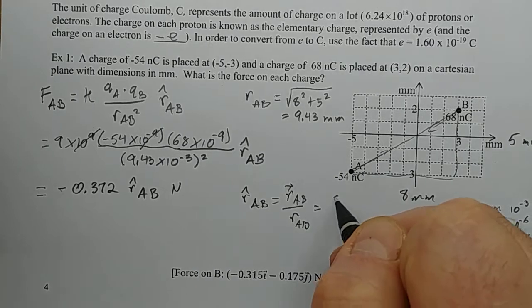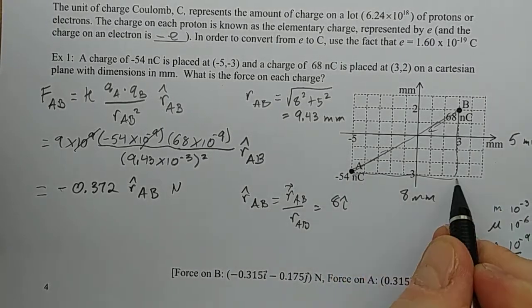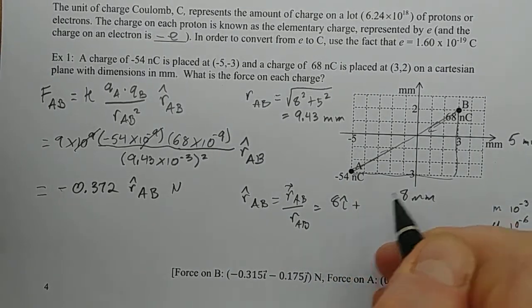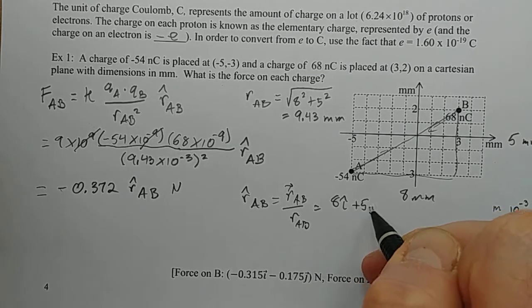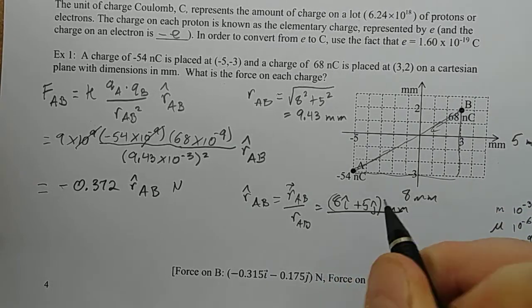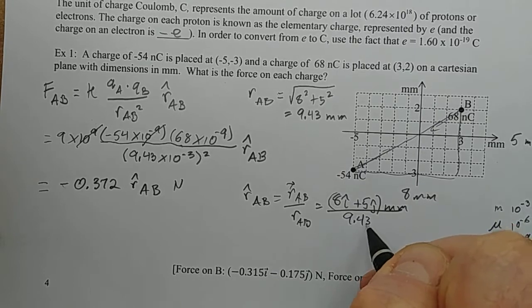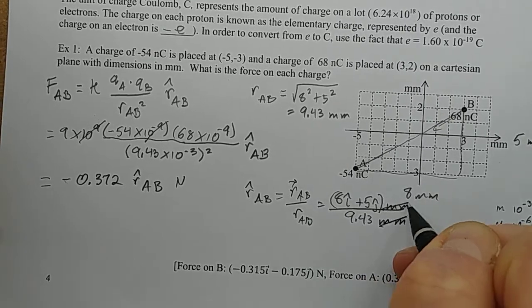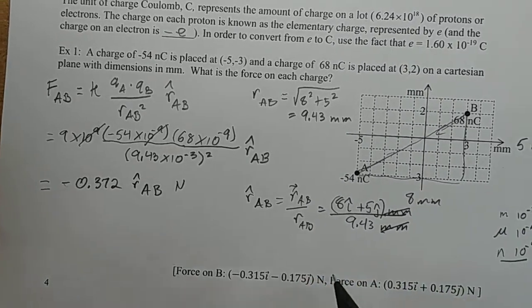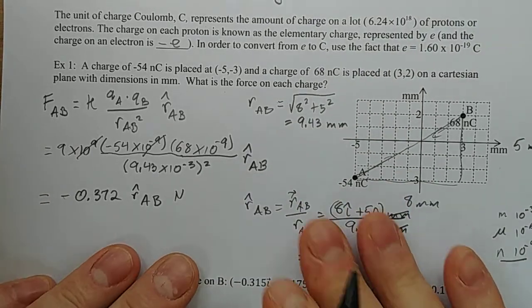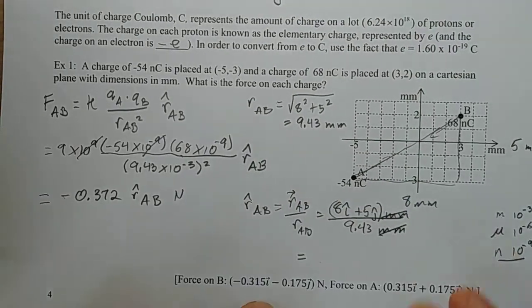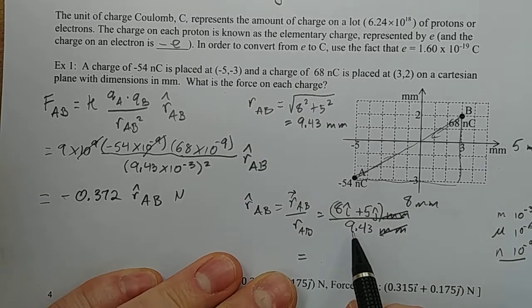So that's equal to 8 i hat, because to go from A to B you do 8 i hat, plus 5 j hat millimeters, divided by 9.43 millimeters. Notice that the millimeters cancel. So now we can just divide that out. And we get 8 divided by 9.43.